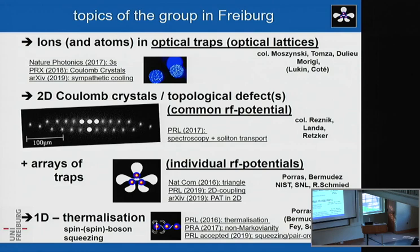We deal with conventional ion traps — radiofrequency traps — where we increased or reduced the radial confinement in a non-adiabatic way, going from linear chains to zigzag structures. If you do it fast enough, then the structural phase transition occurs at different locations in the crystal without the different parts knowing about each other, because phonons — not the speed of light — are responsible for transferring the information. So we get this zigzag structure with what you might call a topological defect in the center of the crystal.